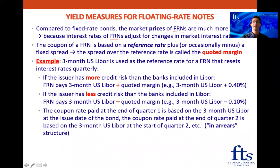So how does the coupon work for the FRN? The coupon of an FRN is based on a reference rate, like LIBOR, plus — or sometimes minus — a fixed spread. So the coupon equals the reference rate plus a fixed spread. The spread over the reference rate is called the quoted margin, and that quoted margin is fixed. The lower the credit quality of the issuer, the higher the spread they must pay over the reference rate to compensate investors for the extra risk.